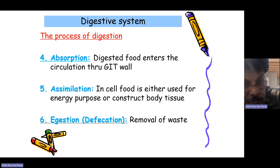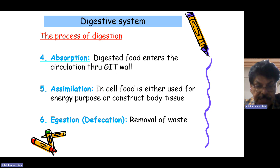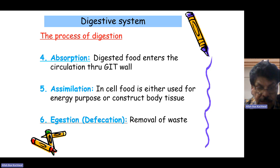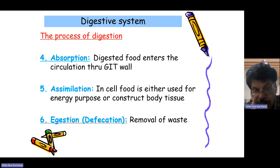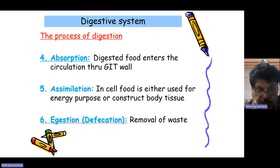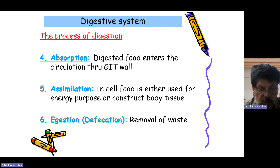After digestion, absorption takes place where the digested food enters the circulation. Assimilation means the absorbed food is either used for energy or to construct body tissues. Finally, defecation is the removal of waste products.